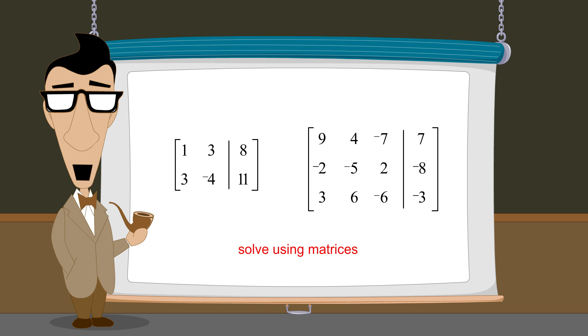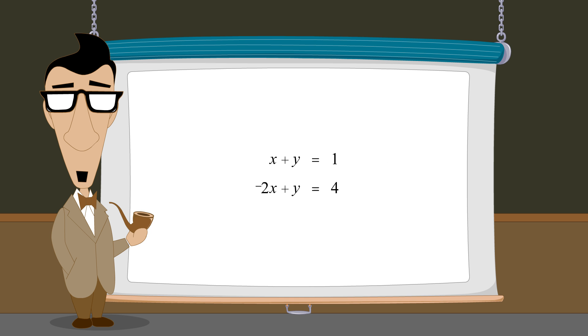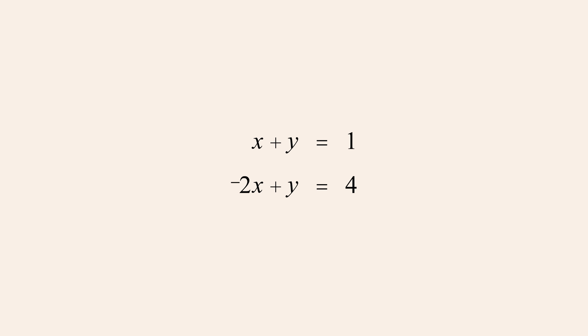But before we see how to solve a system in three variables, let's briefly review how the elimination method works when solving a system in two variables. As we saw in the chapter "Solving Systems of Equations by Elimination," when using the elimination method to solve a system in two variables, we add a multiple of one equation to the other, choosing a multiple which will eliminate one of the variables.